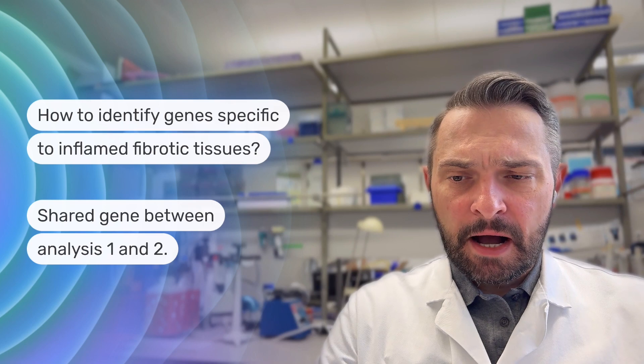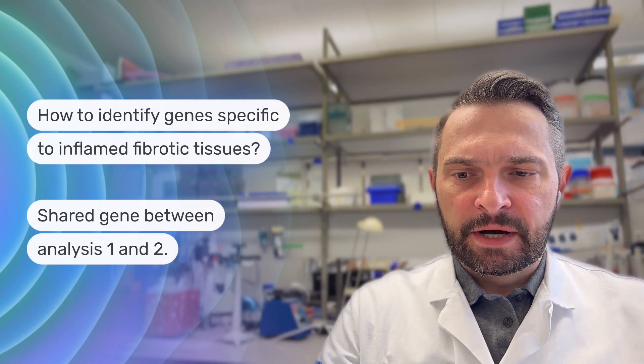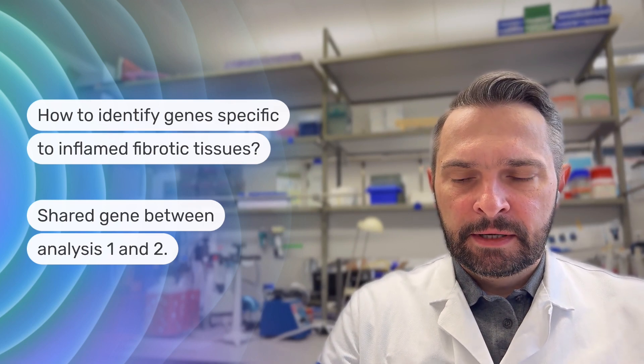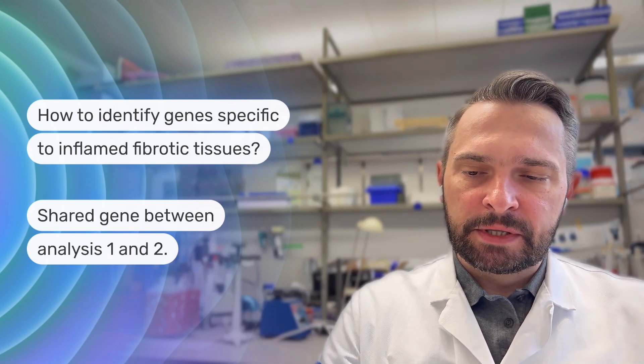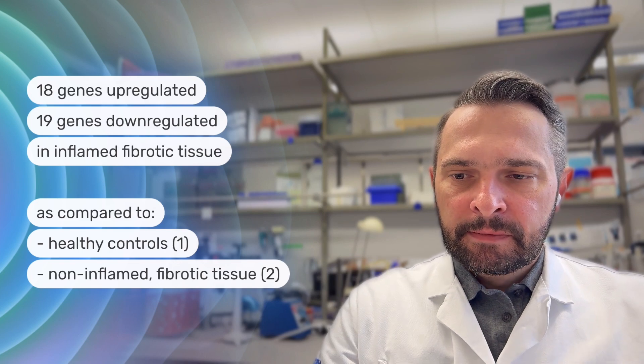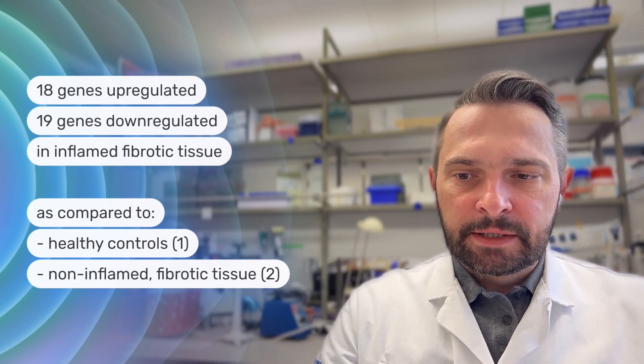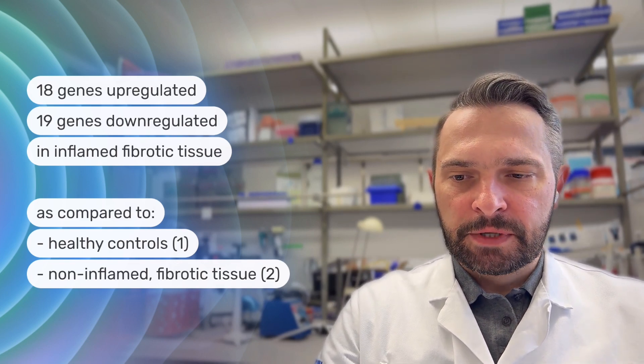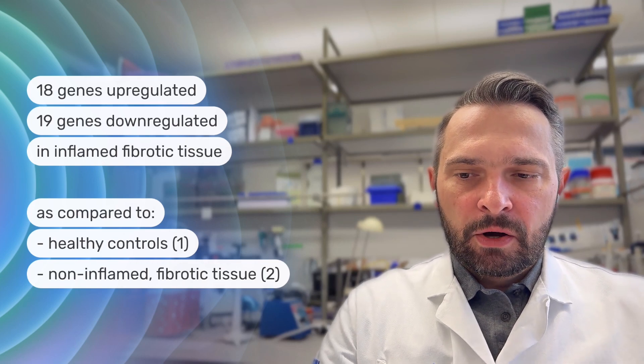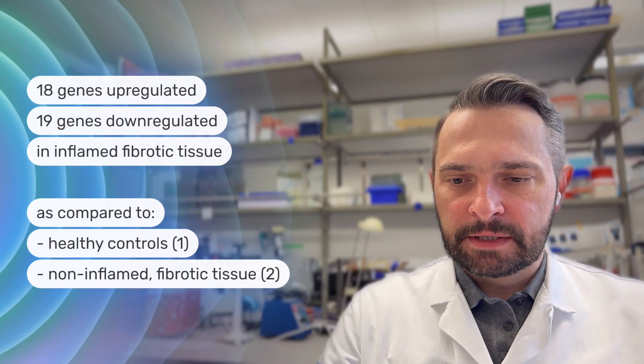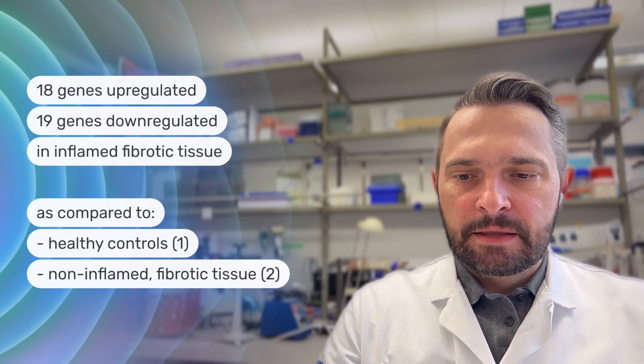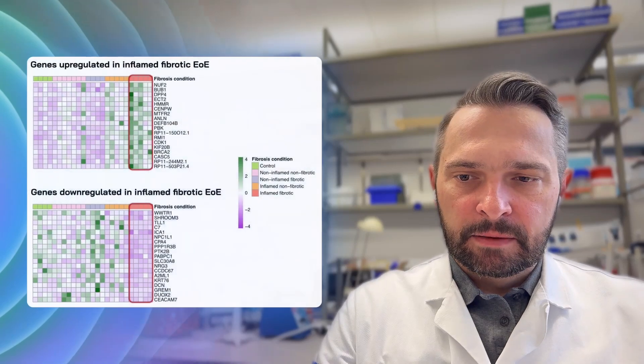Then we asked how we could identify genes specific for inflamed fibrotic tissues. We thought the best way would be to find the genes which were shared between analysis number one and analysis number two. And in this way, we found 18 genes which were upregulated and 19 genes which were downregulated, characteristic for fibrotic tissues, which means they were coming from the analysis where we compared inflamed fibrotic tissues versus healthy controls in analysis number one and the non-inflamed fibrotic tissues in analysis number two.